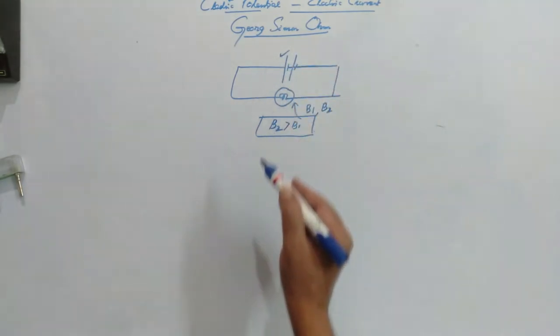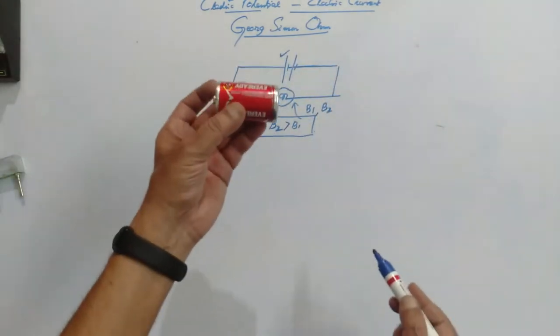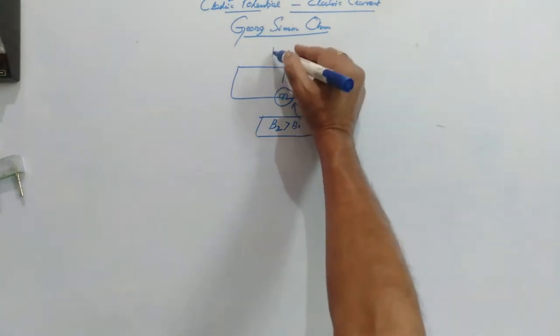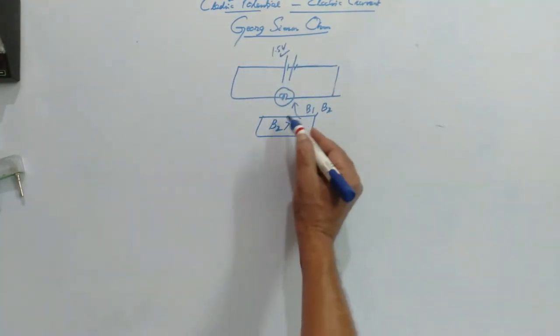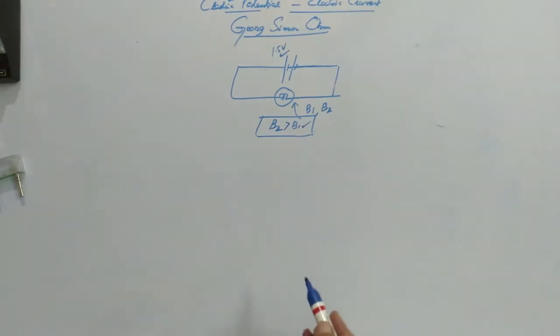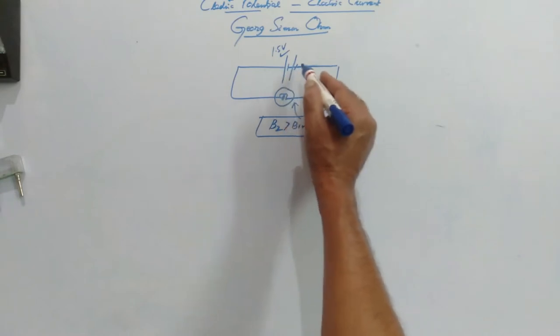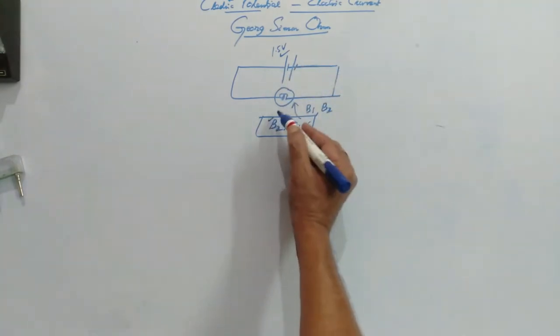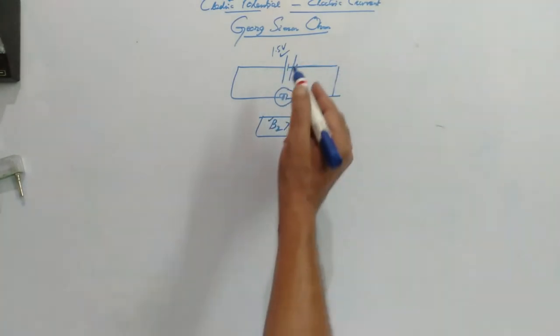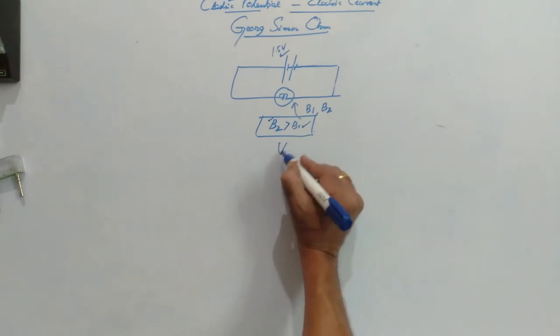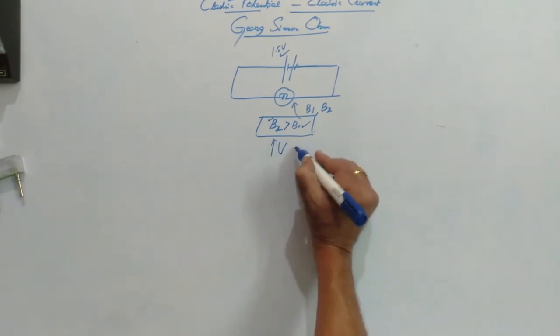Initially, suppose if I take a cell like this, it is 1.5 volt. When 1.5 volt, then this is the brightness. And 3 volt, because it is connected in series one after the other, then the brightness is increased. So it clearly tells us that when V is increased, the brightness is increased.